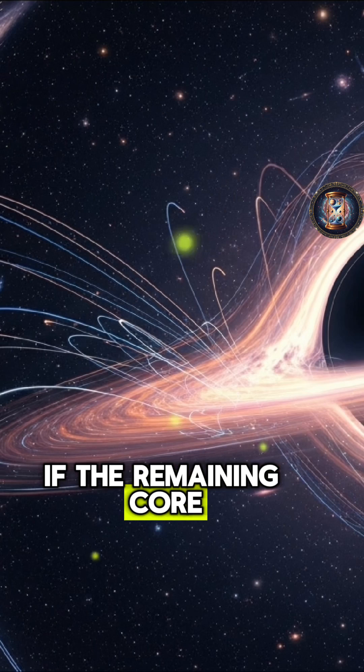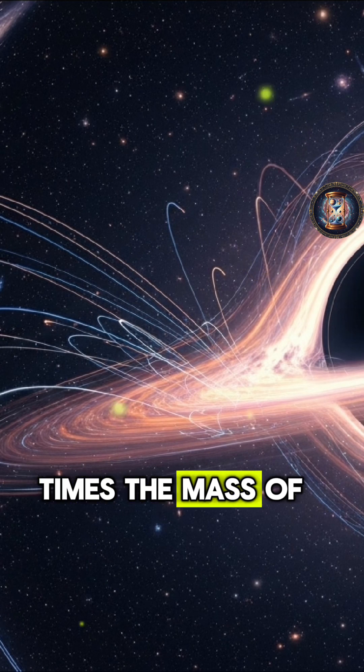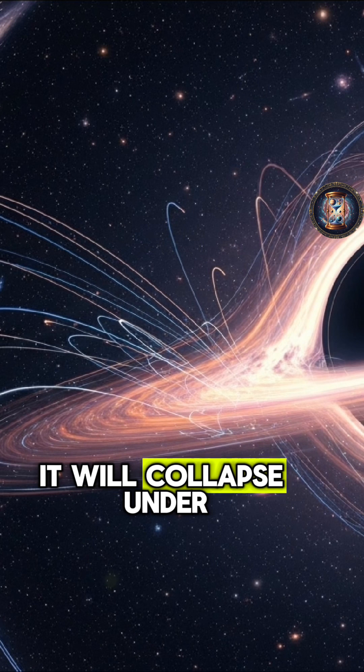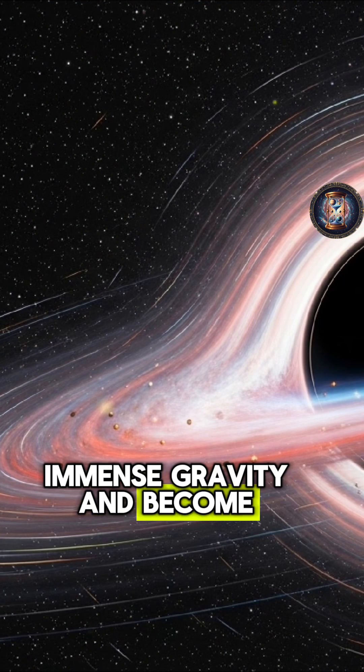If the remaining core has a mass of about 1.4 to 3 times the mass of the Sun, it will collapse under immense gravity and become a neutron star.